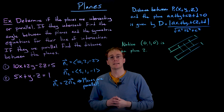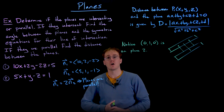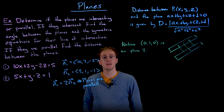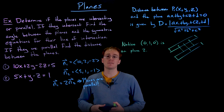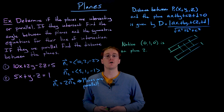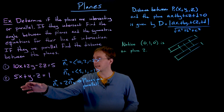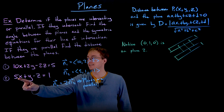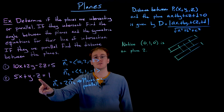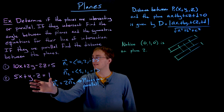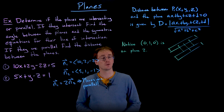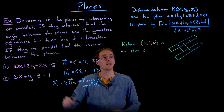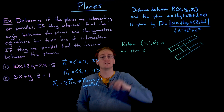We can very quickly find a single point on one of our planes just by using these scalar equations. We select a value for two of the variables and then solve for the remaining variable. In this case I decided to work with the second equation — I set x and z both equal to zero, and that told me that y has to be equal to 1. So a point that is on our second plane is the point (0, 1, 0).